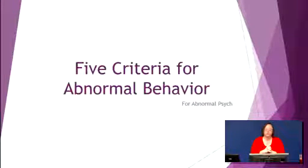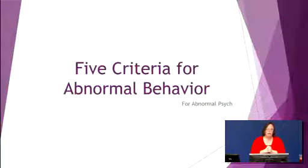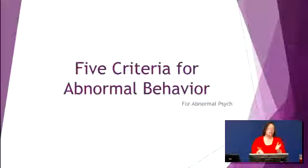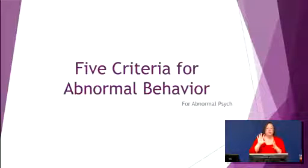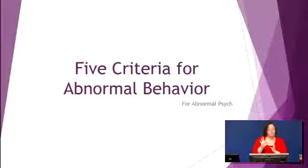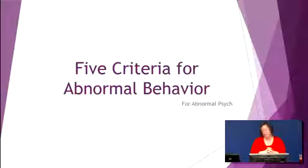Hi gang. Today we're going to go over the five criteria that we use to define abnormal behavior. Sometimes it can be a challenge to determine whether or not someone's behavior and thinking patterns are normal or abnormal. Because it can be so confusing, psychologists and psychiatrists here in the States and from around the world have come together and determined five criteria — five factors that a person has to have in order to be considered having a diagnosable disorder. They can have one criteria present or all five, but at least one needs to be present for a diagnosis.